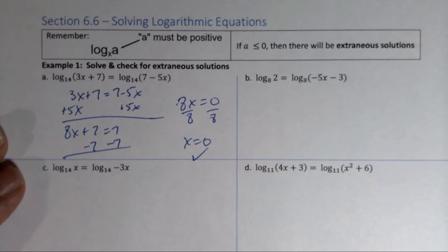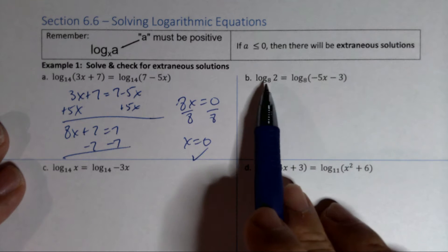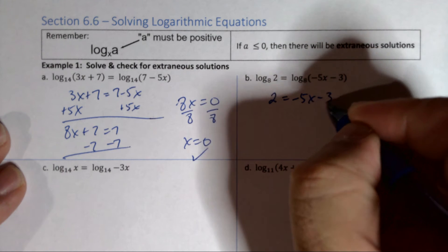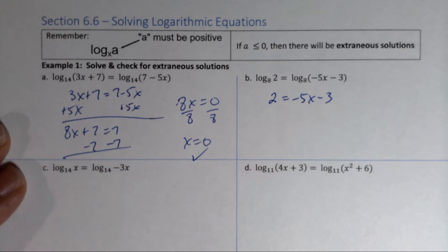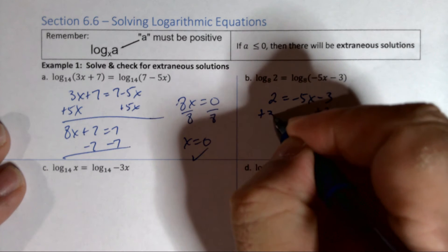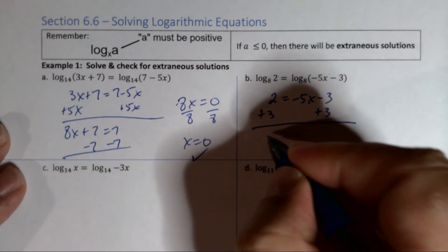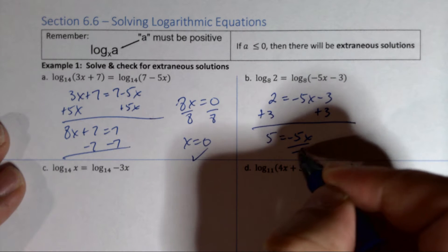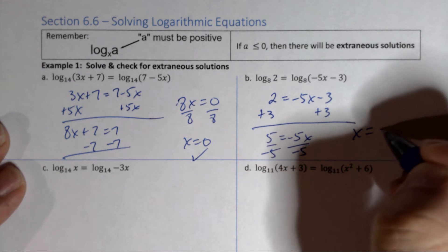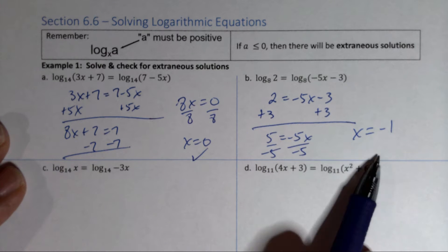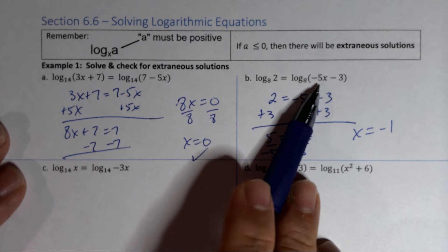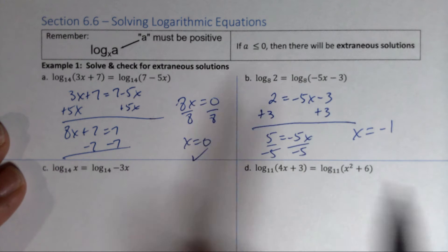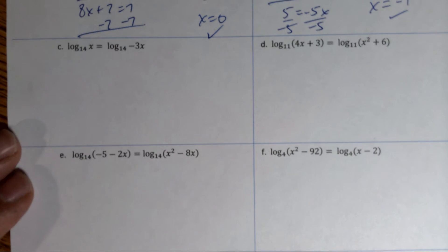For number two, it's already one log on each side so we drop the logs, making it 2 = −5x − 3. Adding 3 to both sides gives 5 = −5x. Dividing both sides by −5 gives x = −1. Checking: −5 times −1 is positive 5, and 5 − 3 = 2, so that's fine.